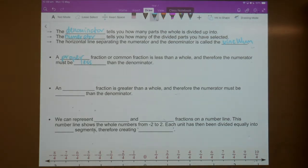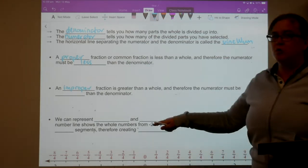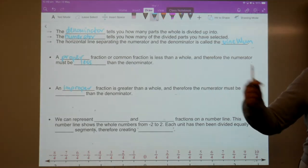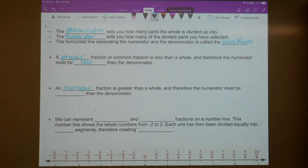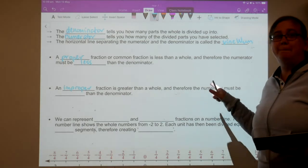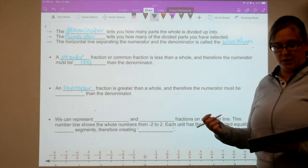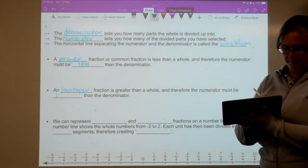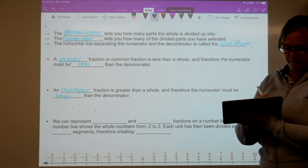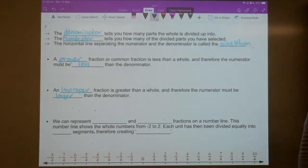Another type of fraction that we have is called an improper fraction. It's an improper fraction. This time, you've got more. So, that might be the pizza plus two slices of someone else's. All right? So, now the numerator is bigger or larger than the denominator.